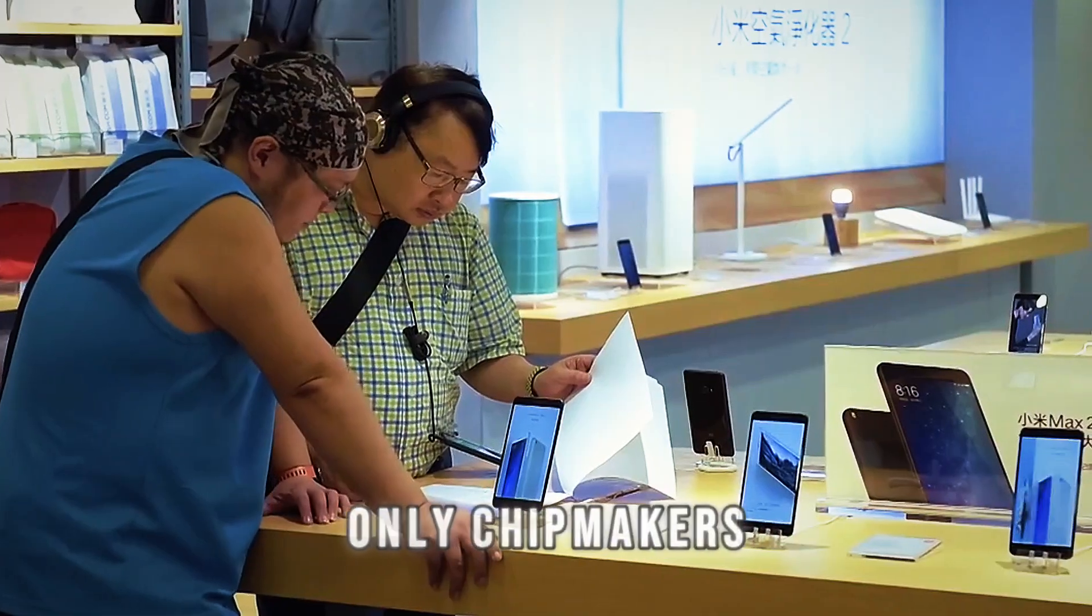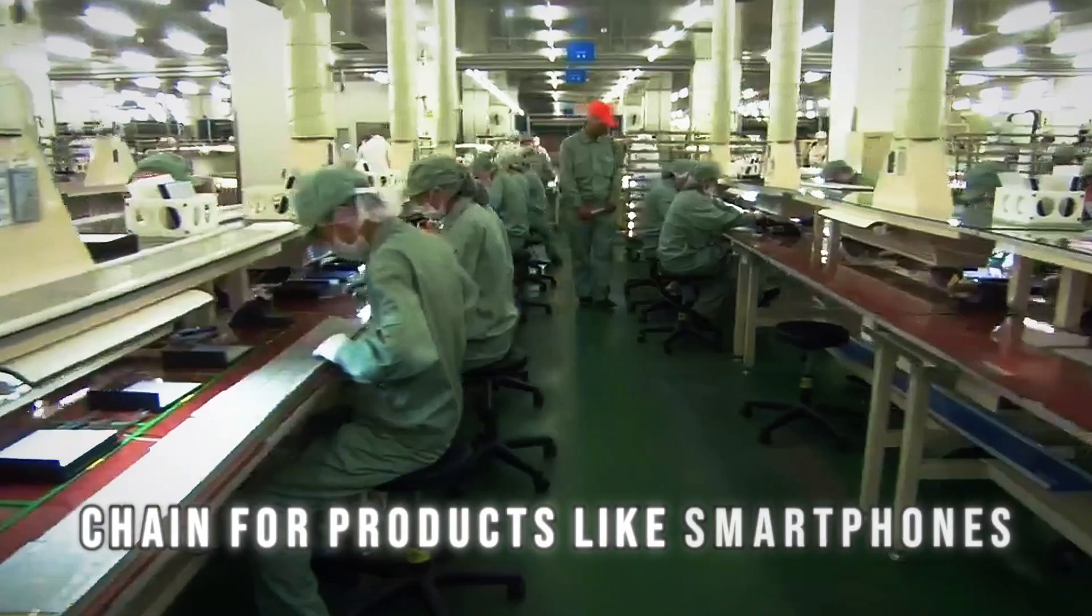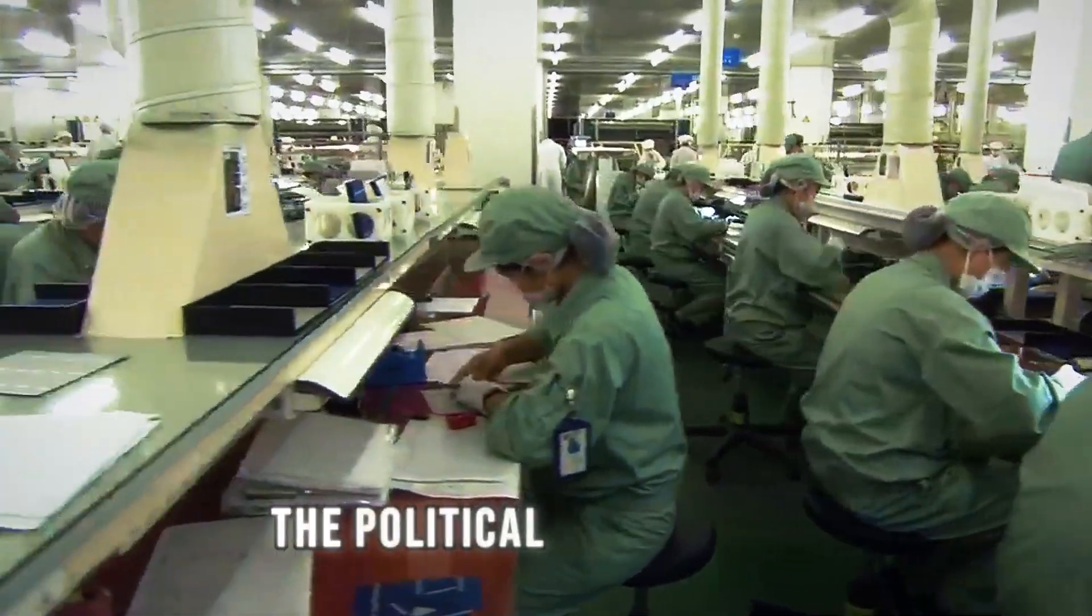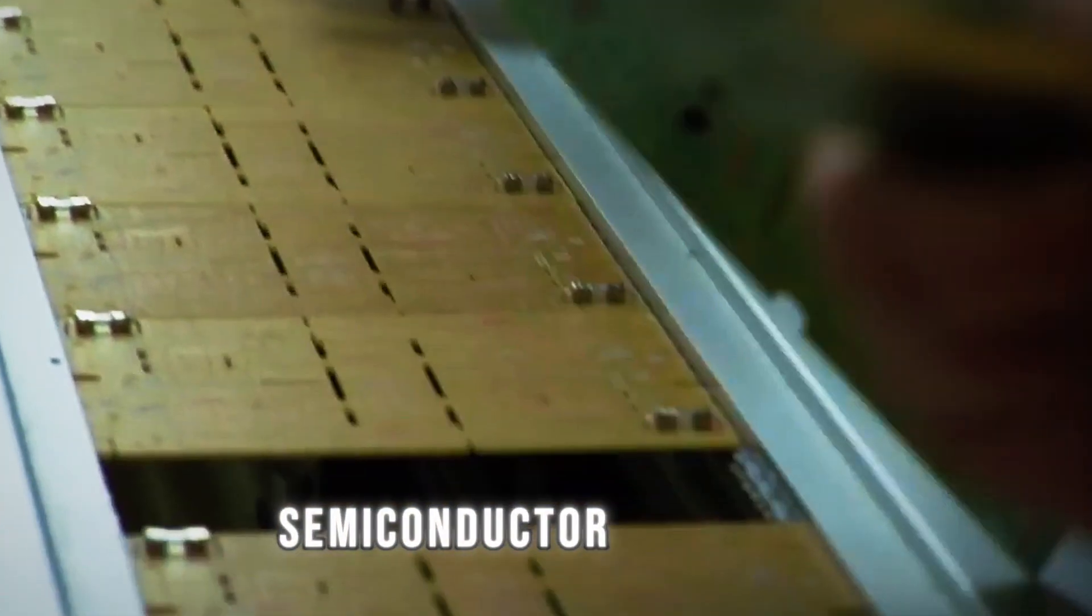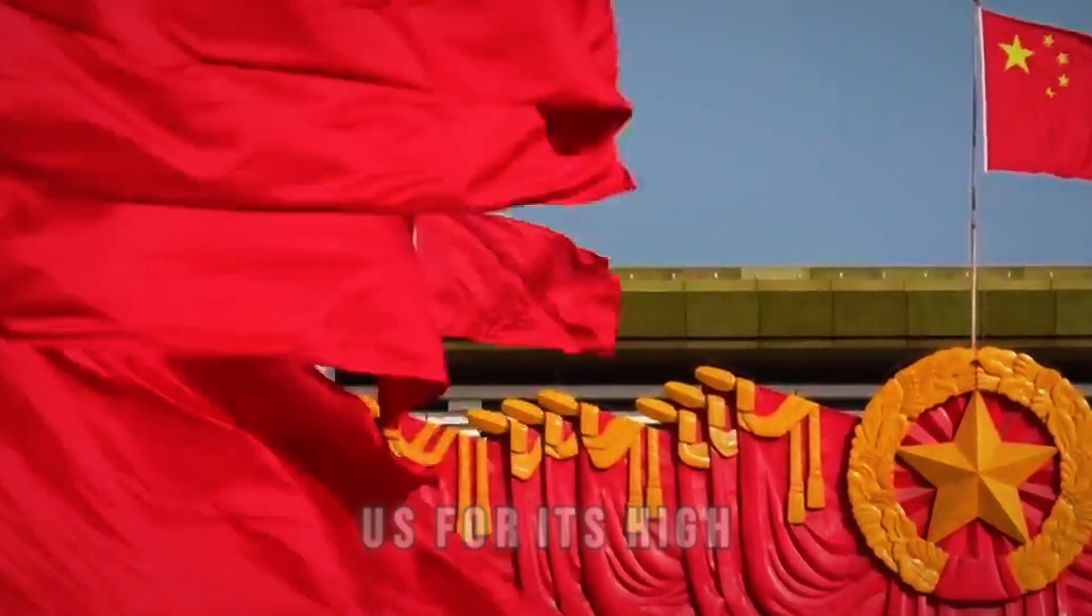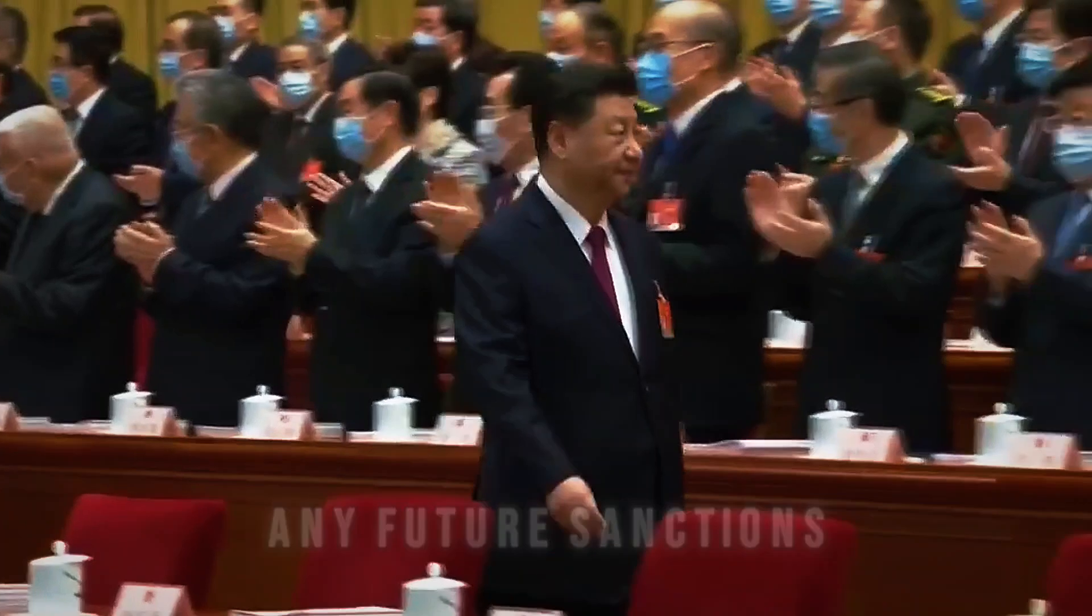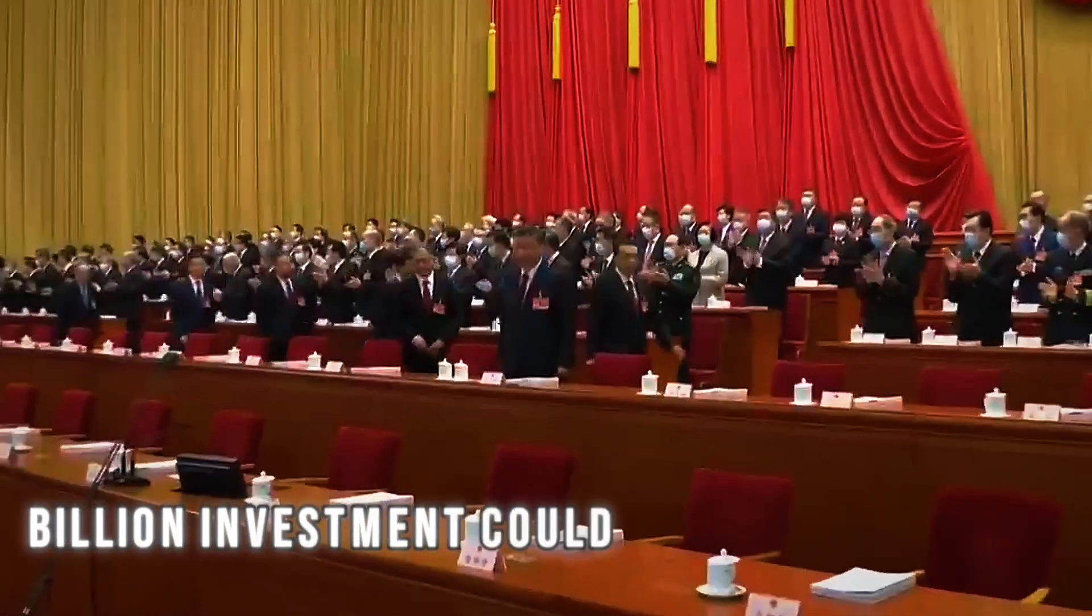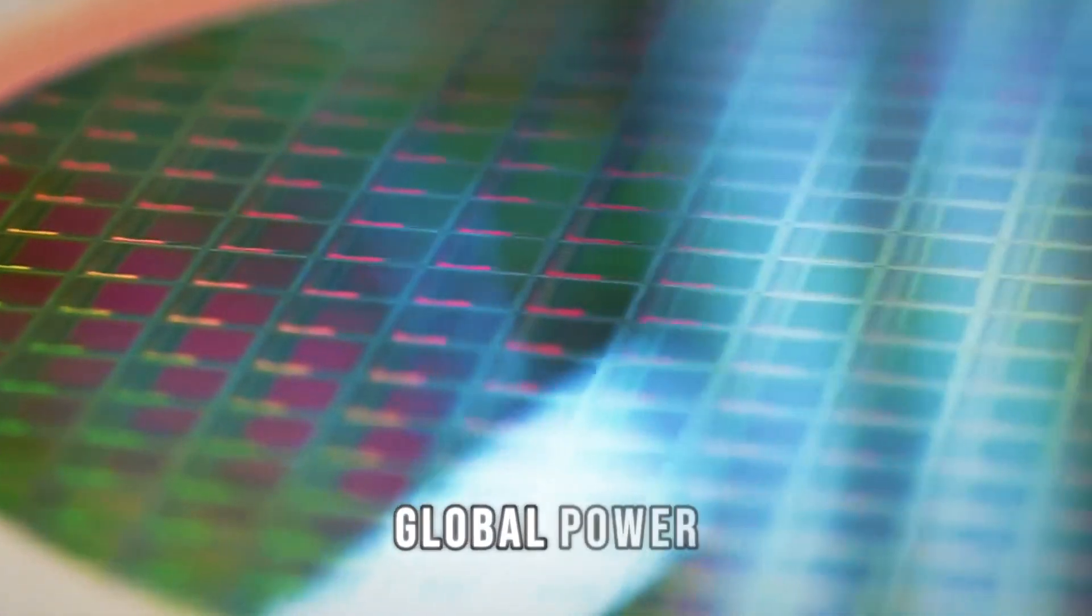And some may even begin to prefer domestic Chinese chips over traditional suppliers from the US and Taiwan. This could affect not only chip-makers but also the entire supply chain for products like smartphones, laptops, and gaming consoles. And let's not forget the political implications. With a self-sufficient semiconductor industry, China would no longer have to rely on the US for its high-tech needs, reducing the effectiveness of any future sanctions.